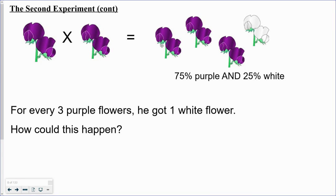What he ends up getting is 75% purple flowers and 25% white. Now for those of you that really like math, you're going to understand why this is a little bit later.